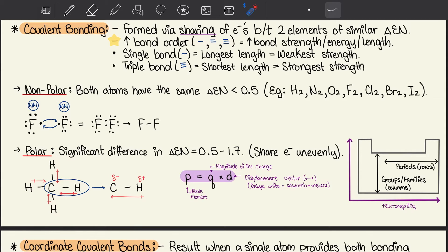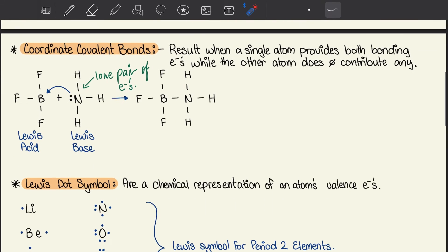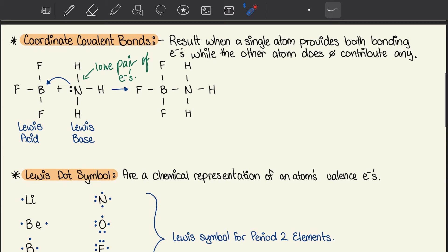Next, we have coordinate covalent bonds, which result when a single atom provides both bonding electrons while the other atom does not contribute any. In the example provided, we have a Lewis acid and Lewis base, where nitrogen with the lone pair of electrons provides both electrons to boron to create a coordinate covalent bond.